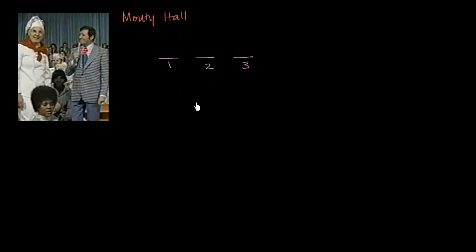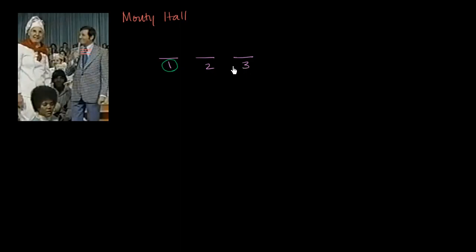Your goal is to try to find the cash prize. They ask which curtain you'd like to select, and let's say you select curtain number one. Then the Monty Hall and Let's Make a Deal crew make it more interesting — they won't just show you whether you won. They'll show you one of the other two curtains that does not have the prize.